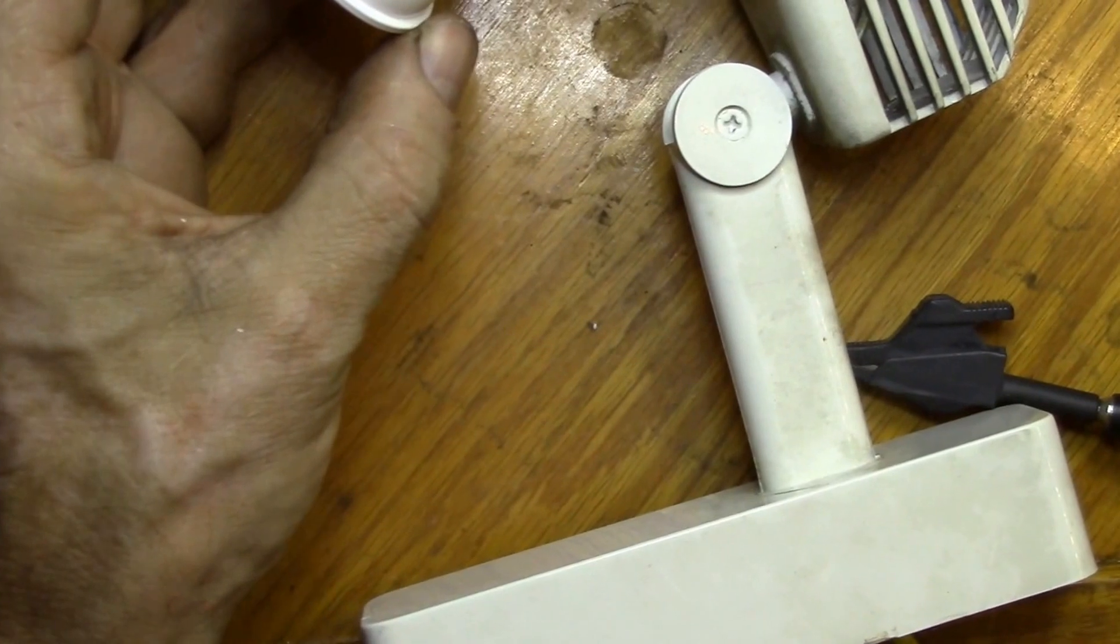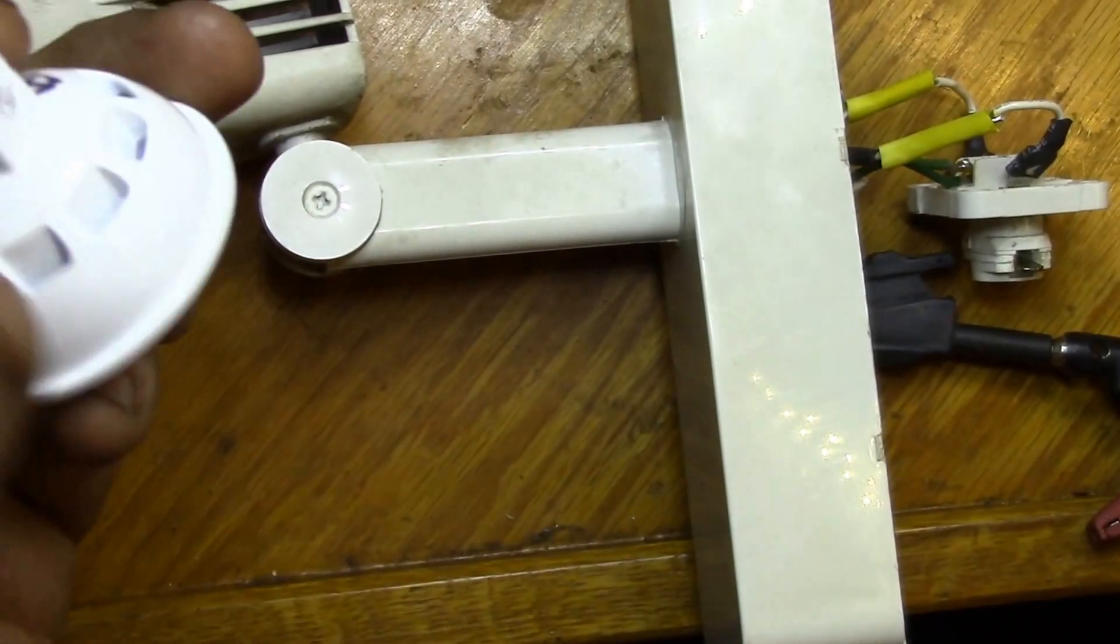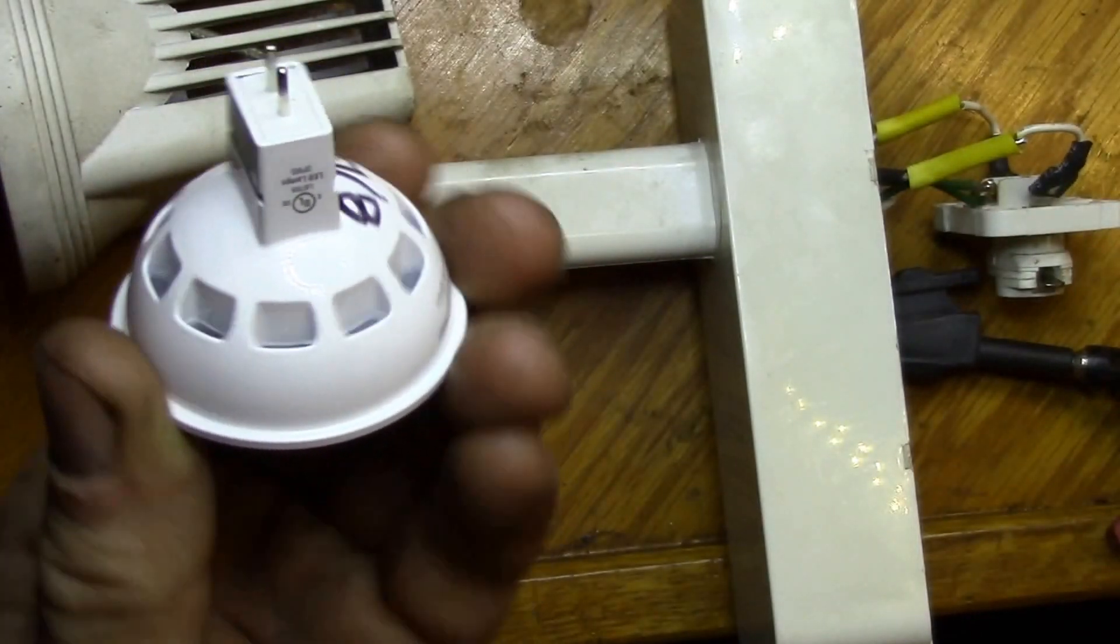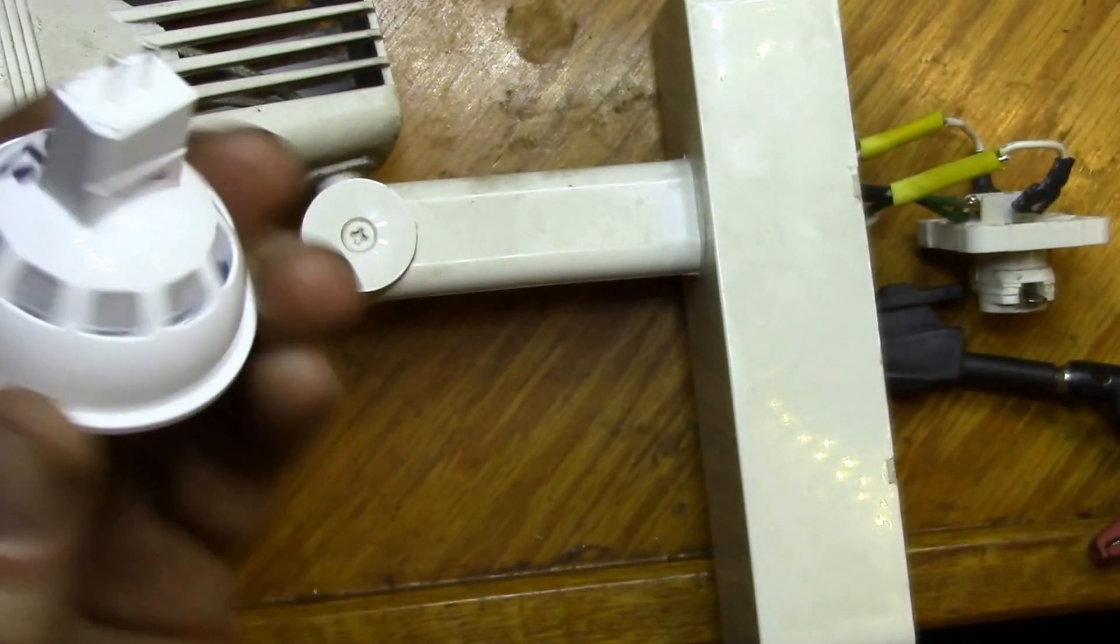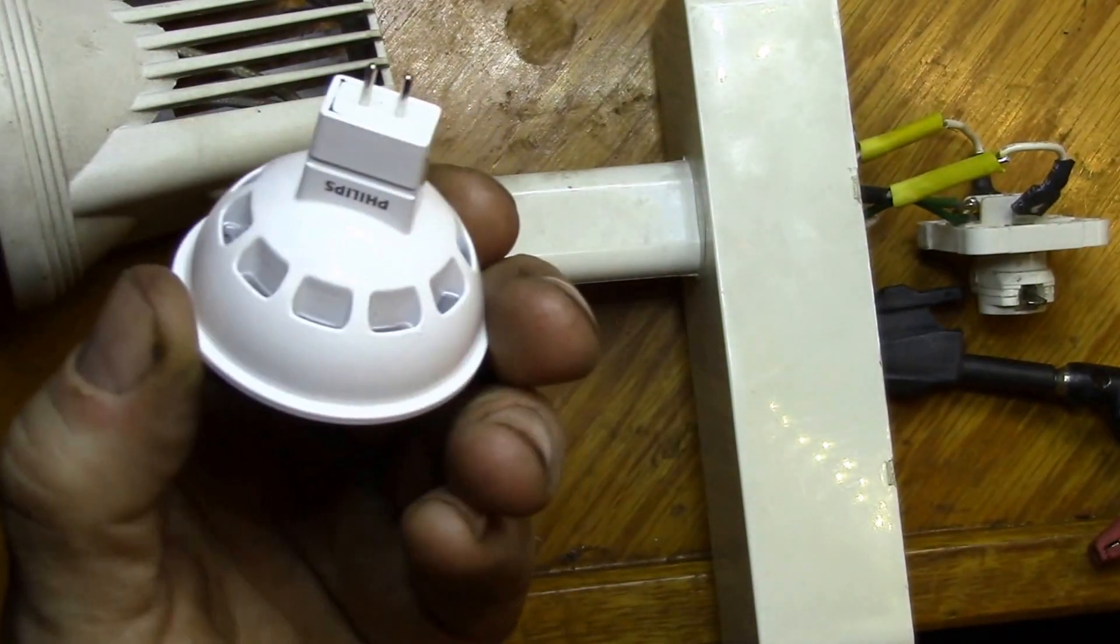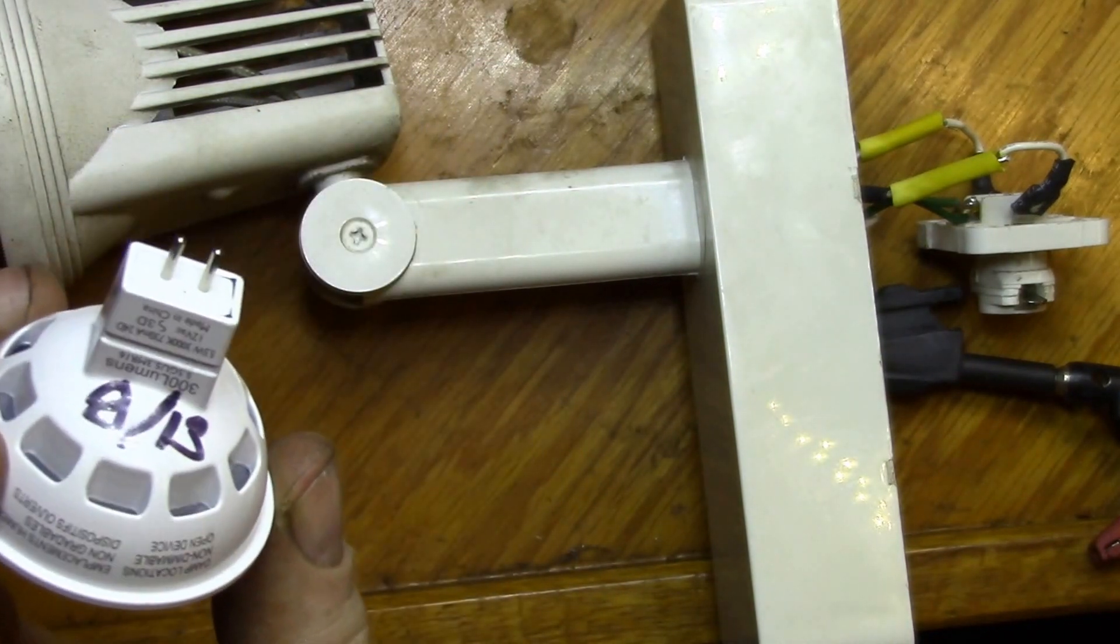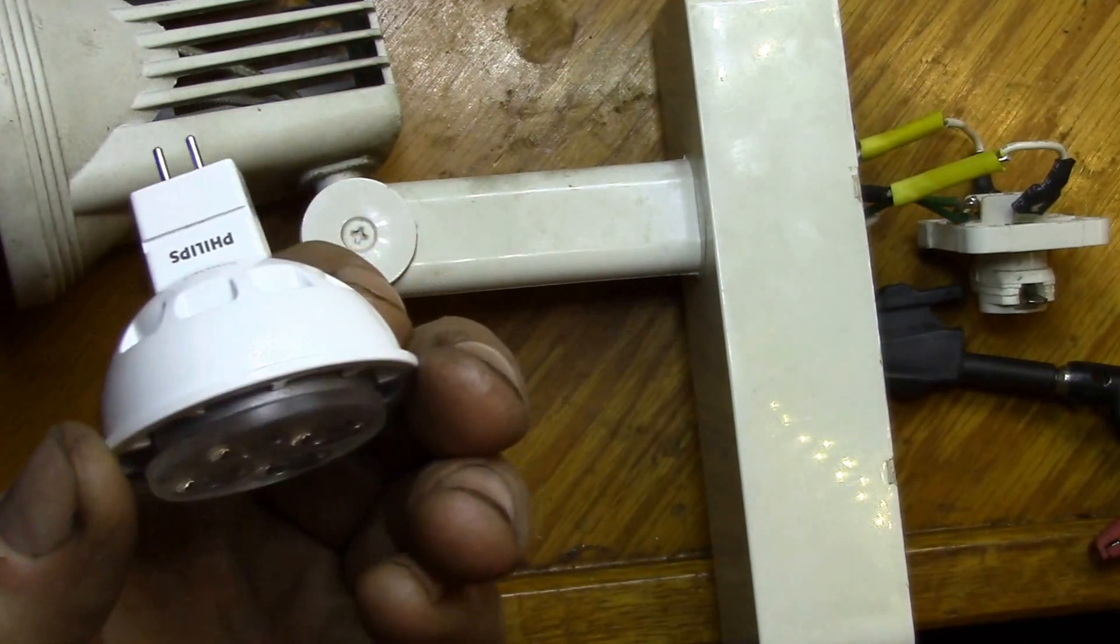The nice thing is these are off the shelf. I picked these up at Home Depot, but they stock 12 volt DC bulbs right in most major hardware stores. They're called MR16 low voltage track lights.